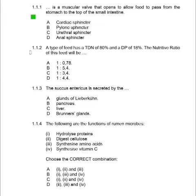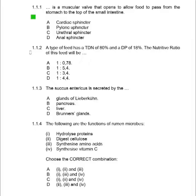Question 1.1.2: A type of feed has a TDN of 80% and a DP of 18%. The nutritive ratio of this feed will be? This question requires calculating the nutritive ratio based on TDN (total digestible nutrients) and DP (digestible protein). Imagine balancing a diet for livestock — this ratio helps ensure optimal nutrition. Answer C.